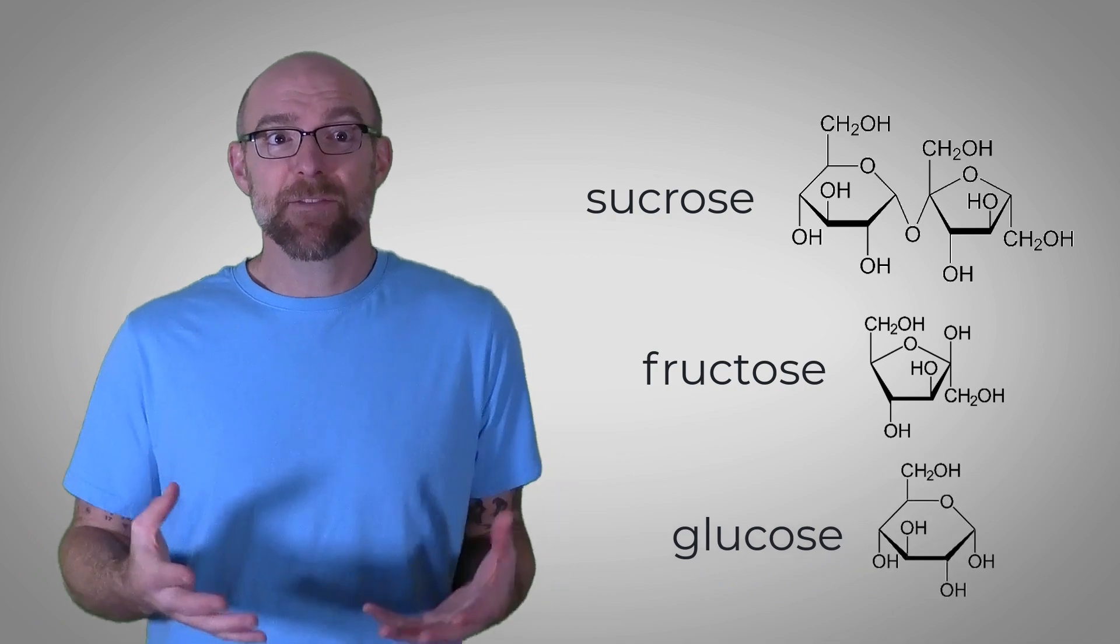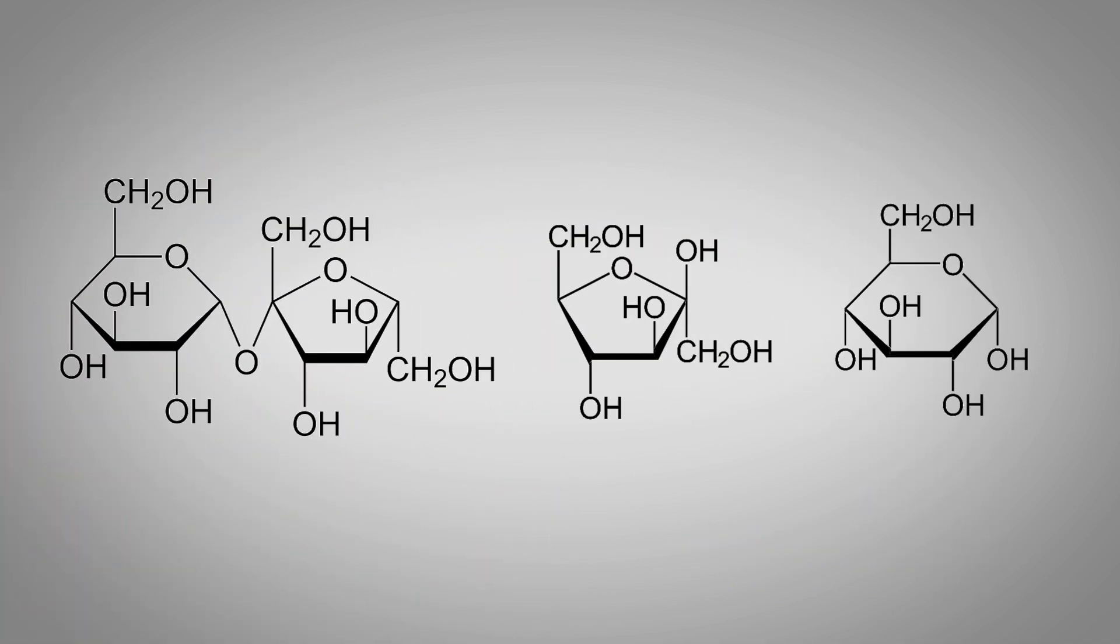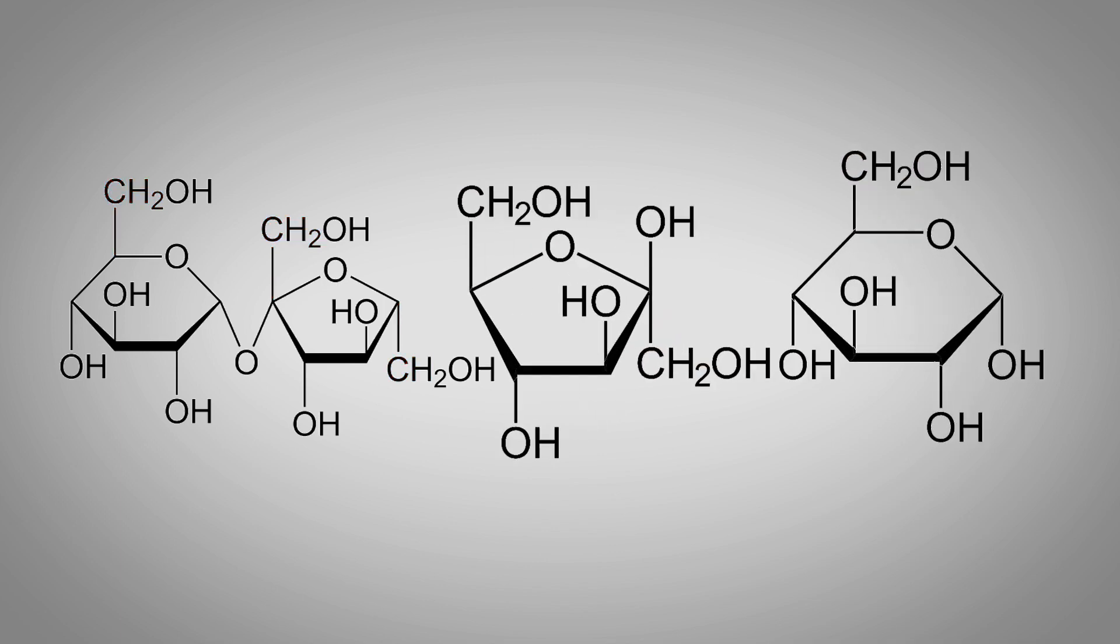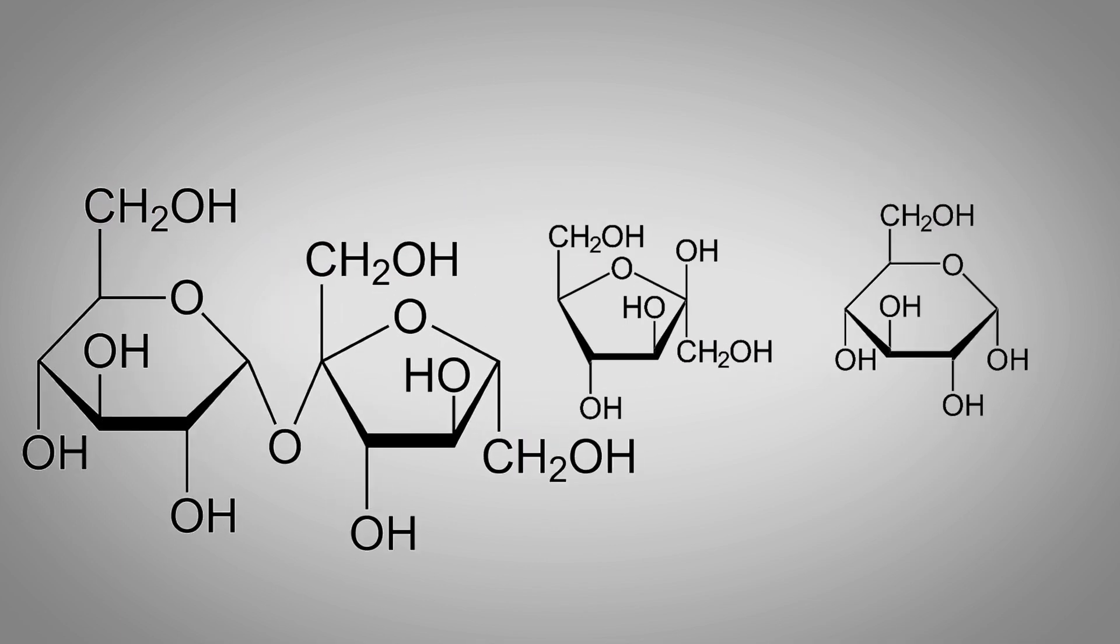You can see that sugars have a pretty common structure. There's a ring of carbon with an oxygen in it. There are OH groups around the outside, along with one or more CH2OH groups. Sometimes it's just one ring, and other times it's two rings connected together.